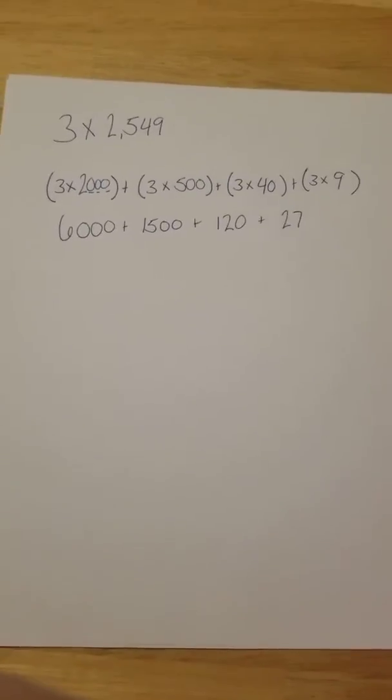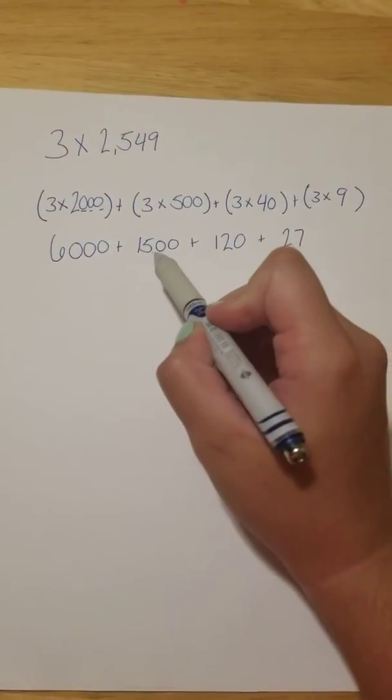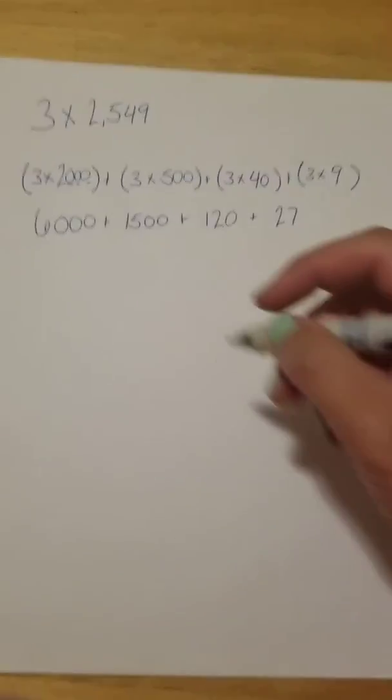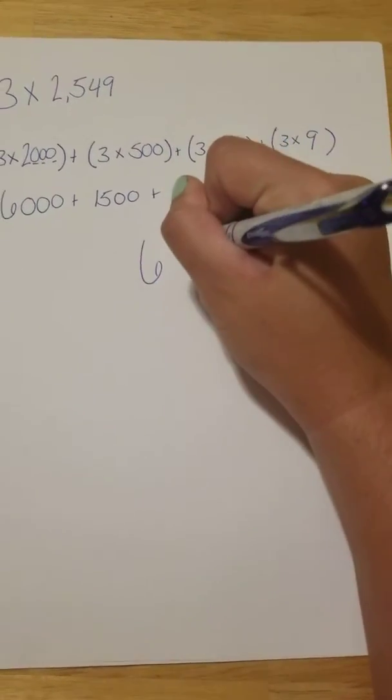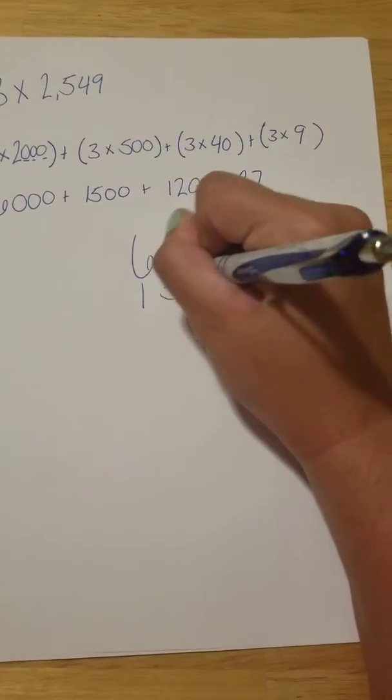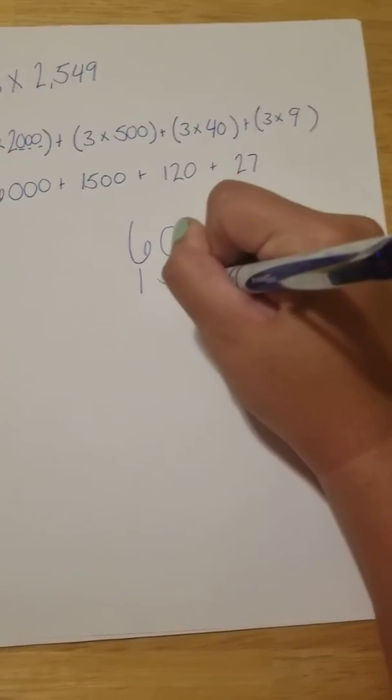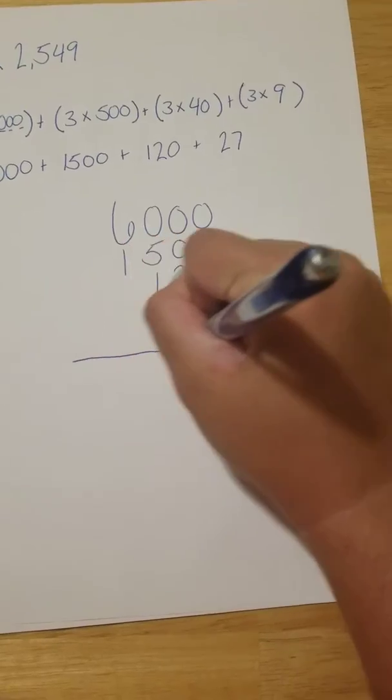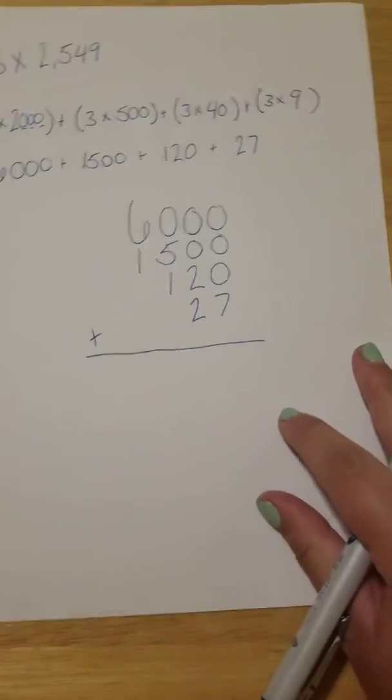Now I'm going to take all these numbers, 6,000, 1,500, 120, and 27, and I'm going to add them all up. It's really important that when you're adding large numbers like this, that you line up the place values. So you have your ones all together, your tens all together, the hundreds are all together.